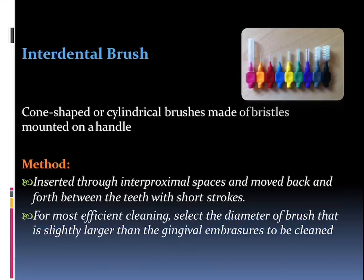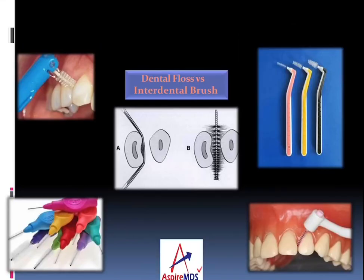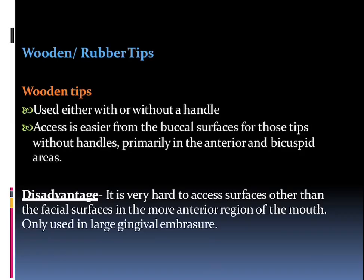Talking about interdental brushes: they are cone-shaped or cylindrical brushes made of bristles mounted on a handle. The method is to insert it through the interproximal area and move back and forth between the teeth with short strokes for most efficient cleaning. We select the diameter such that it is slightly larger than the embrasure to be cleaned, so that it can easily adapt into that area and clean whatever is present in the interproximal space.